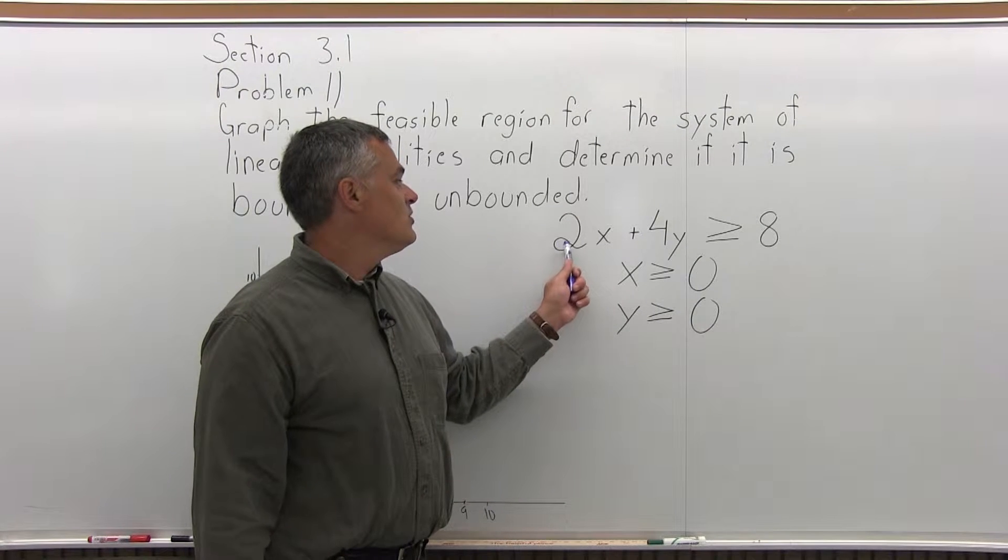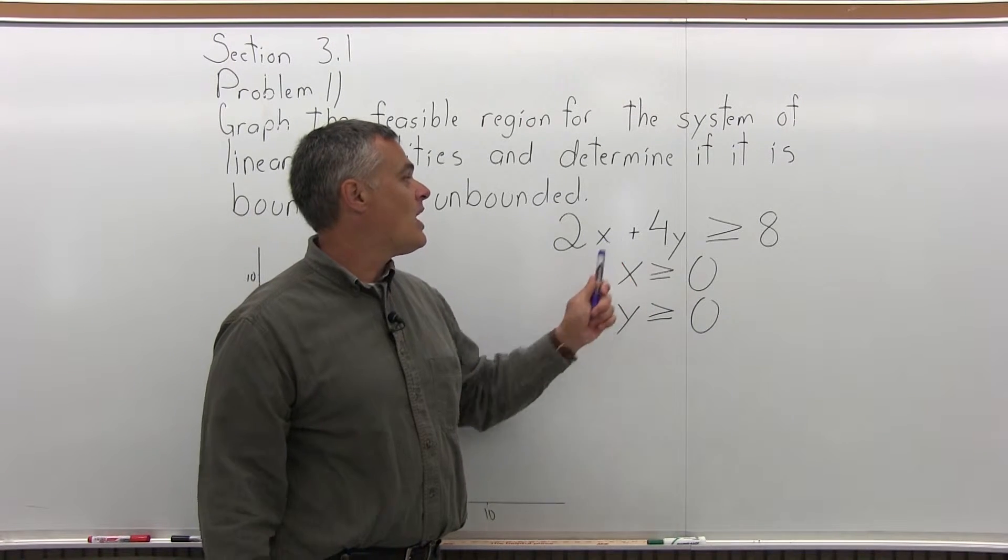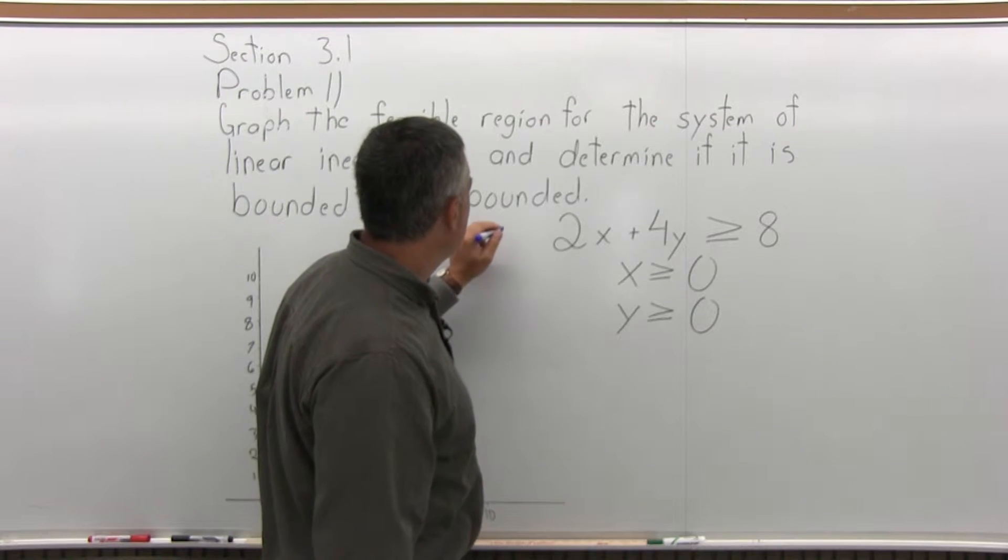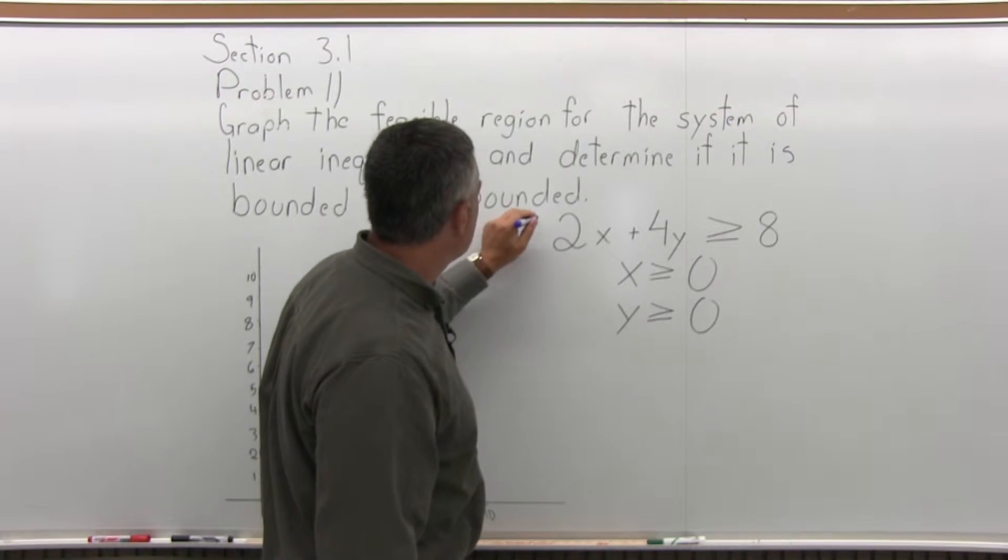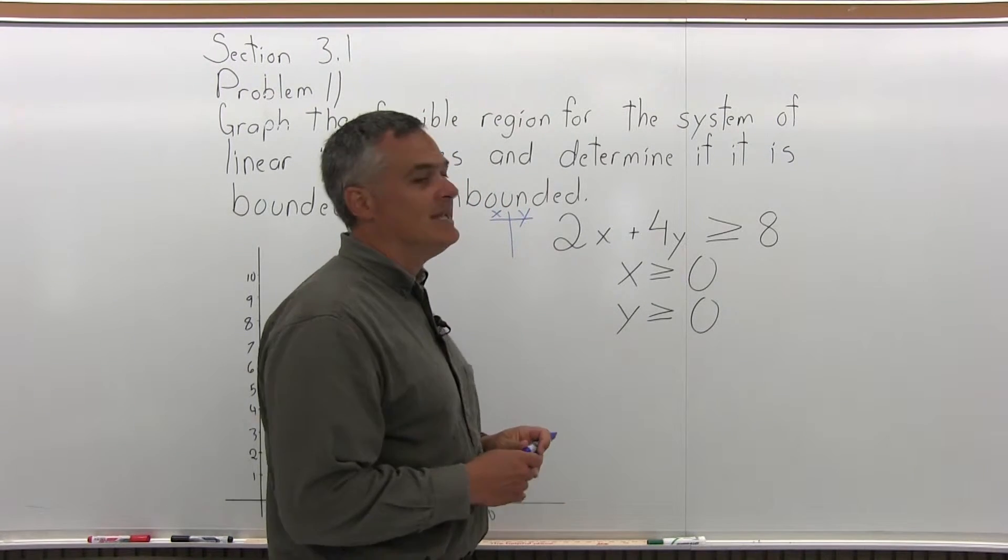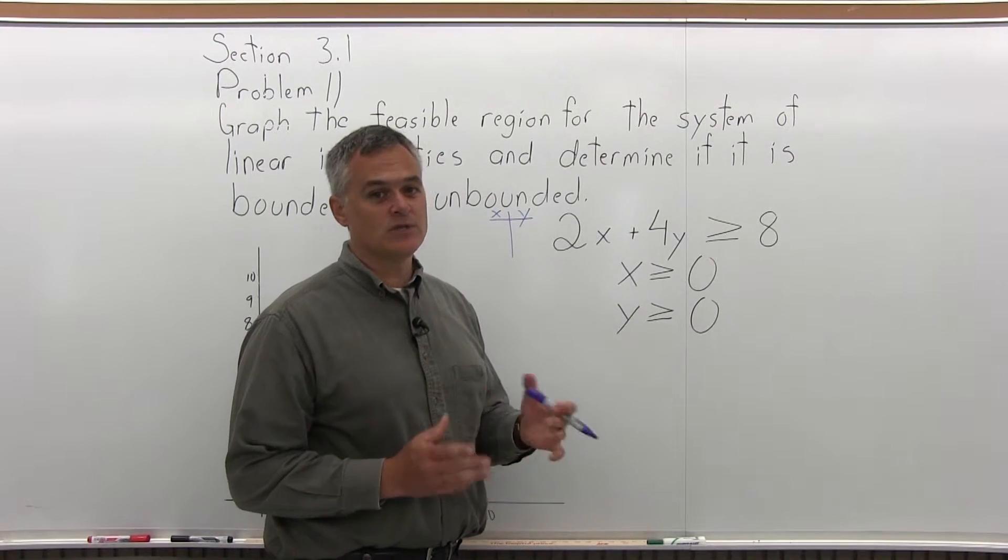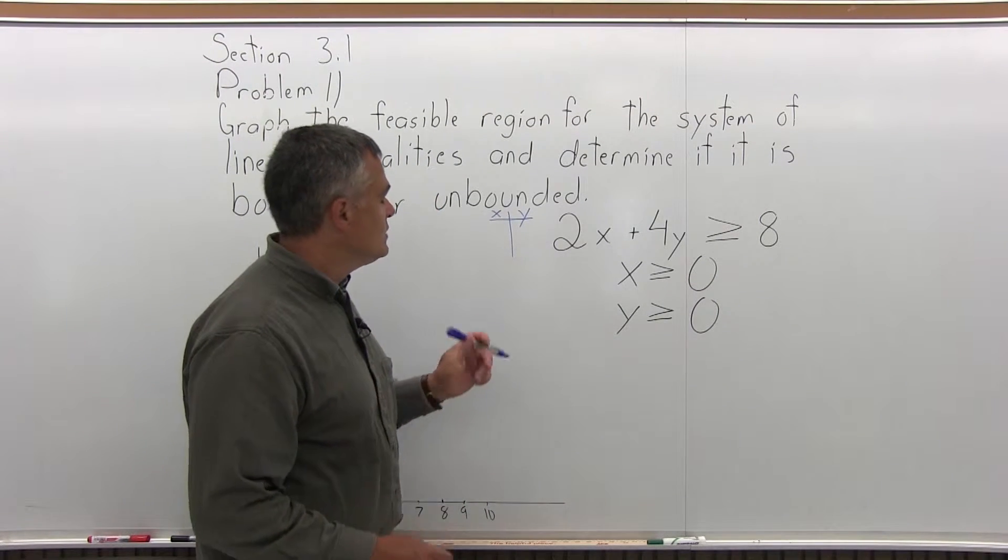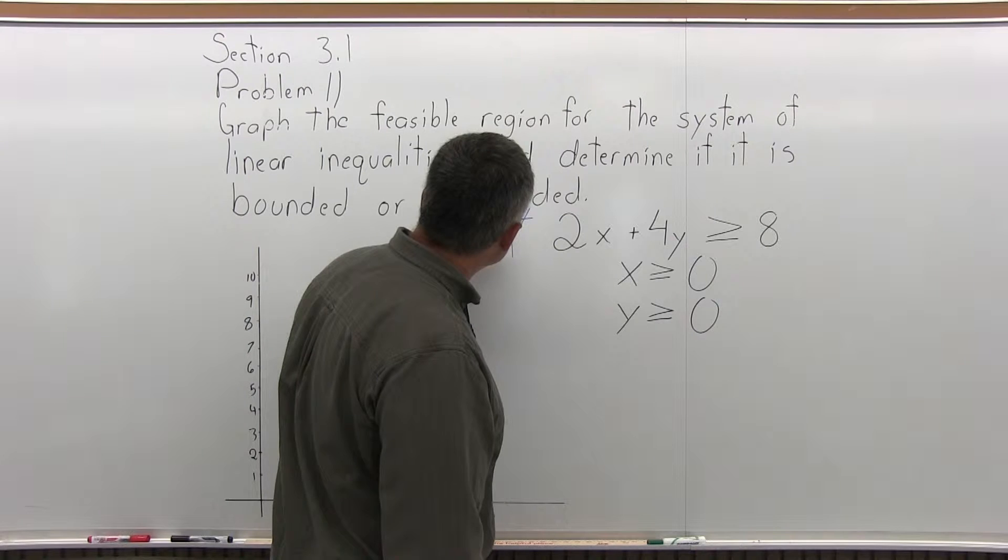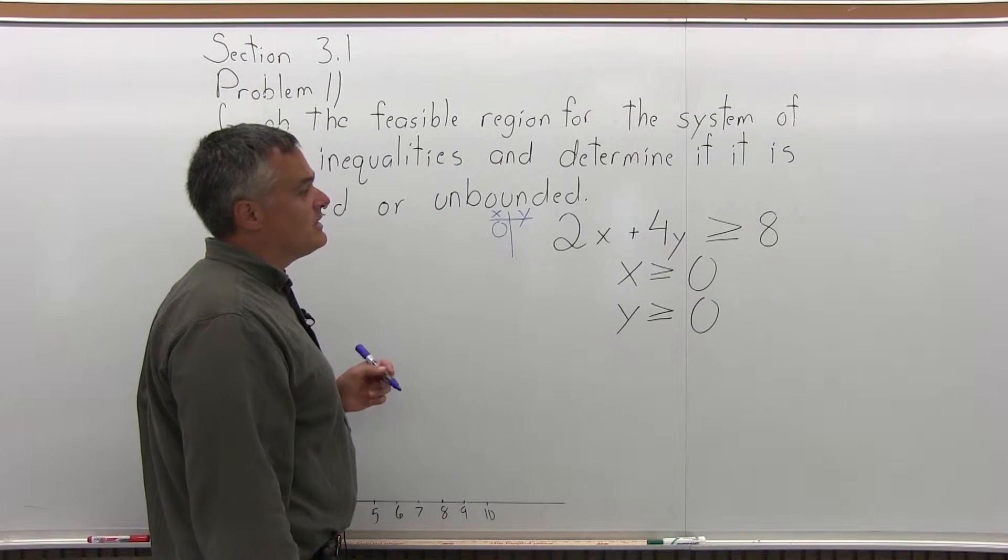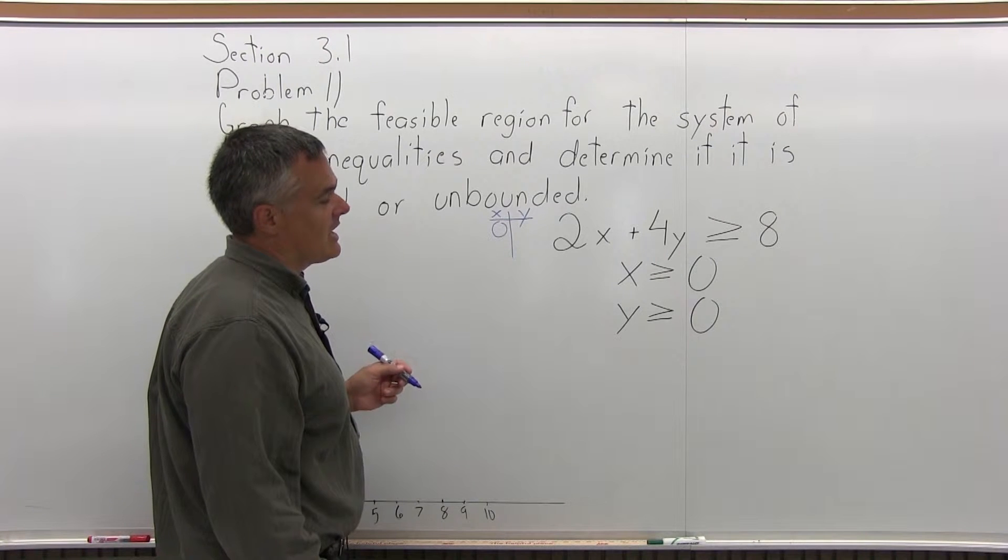Let's start with 2x plus 4y is greater than or equal to 8. Let me make a little chart for that and pretend that it's 2x plus 4y equals 8. Ignore the inequality just for this first step of the four-step process to graph this.